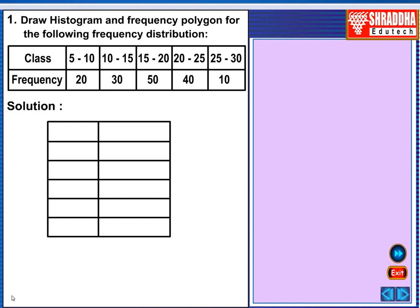Class 5 to 10, 10 to 15, 15 to 20, 20 to 25, 25 to 30. Given frequencies 20, 30, 50, 40 and 10.